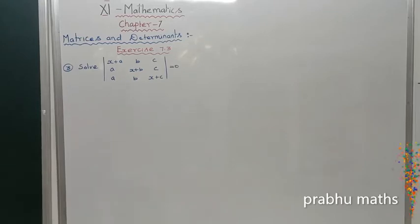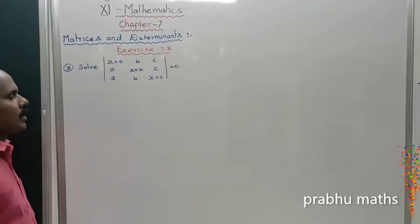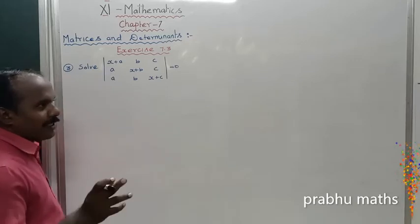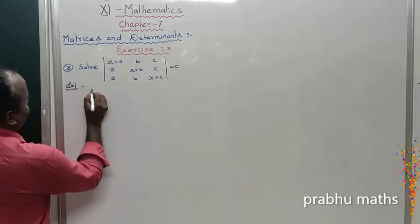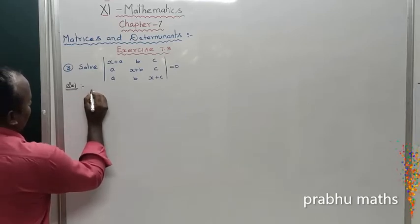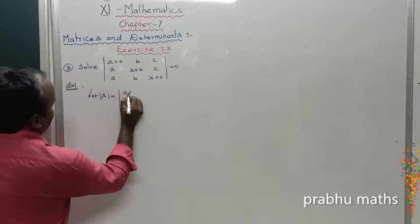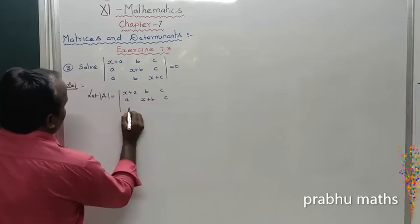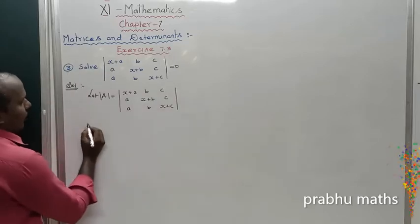Exercise 7.3, third sum. Solve and determine: the determinant of the matrix with entries (x+a), b, c / a, (x+b), c / a, b, (x+c) is equal to 0. That is the given determinant. To find out the possible factors of this matrix, let us consider the determinant A.